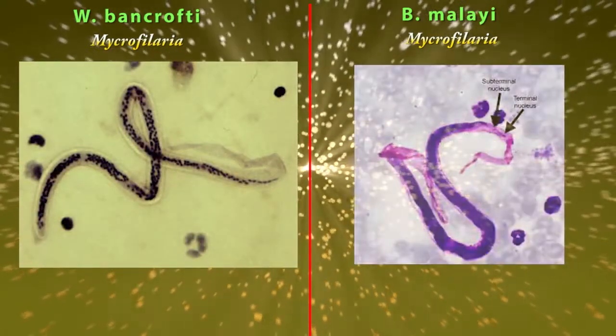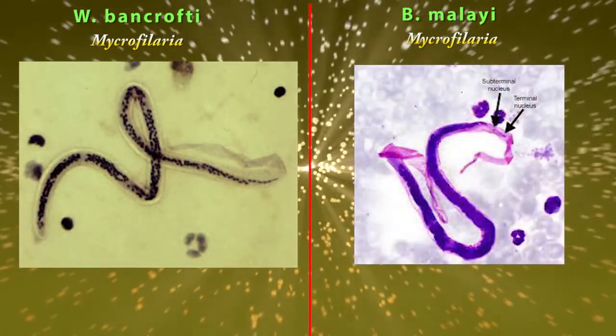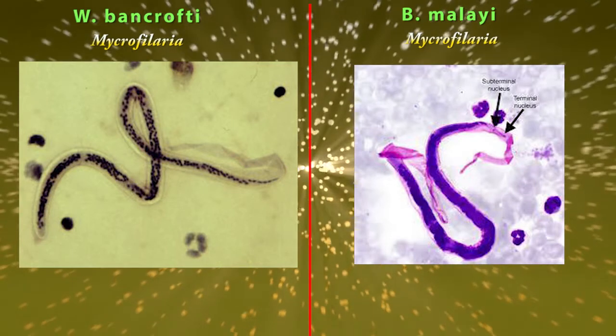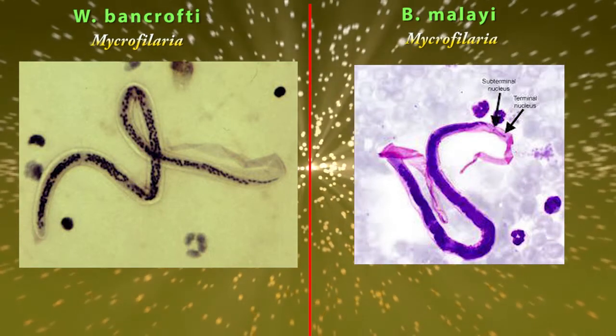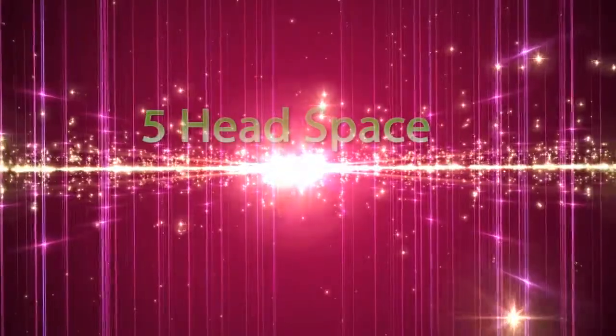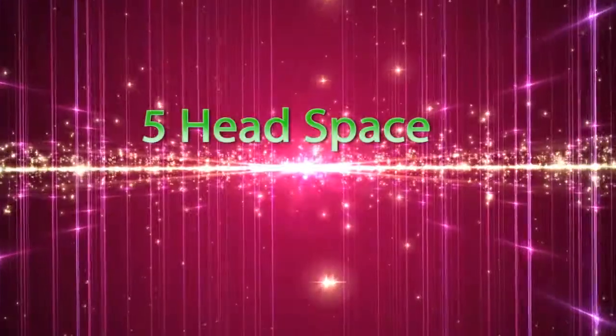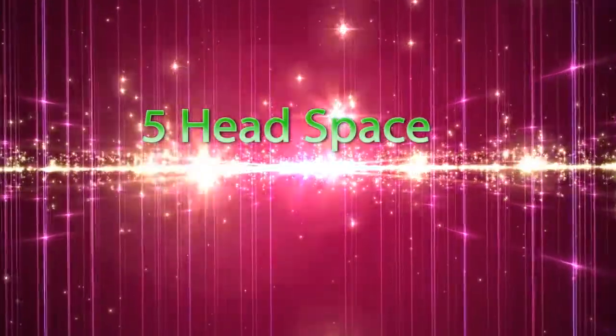Difference number four: terminal nuclei. We cannot see any terminal nuclei from Wuchereria bancrofti, but in Brugia malayi we can usually see two terminal nuclei.